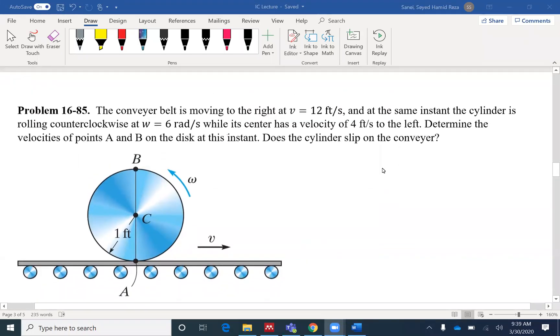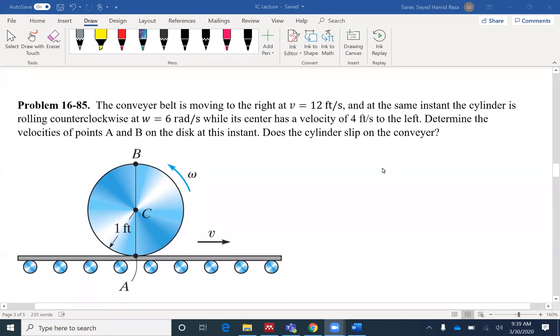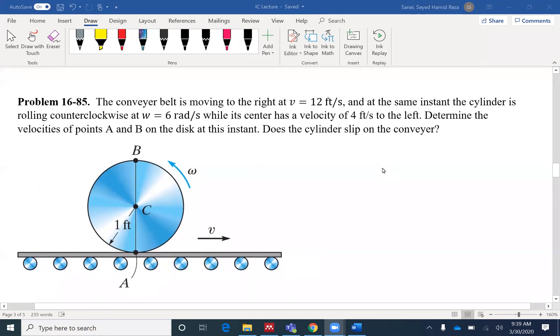Hello everyone. Today we are going to solve problem 85 of chapter 16. The conveyor belt is moving to the right at a velocity of 12 feet per second, and at the same instant the cylinder is rolling counterclockwise at 6 radians per second while its center has a velocity of 4 feet per second to the left.